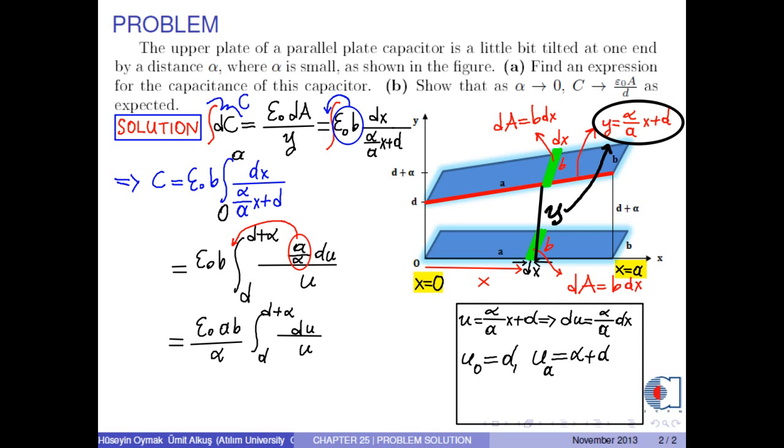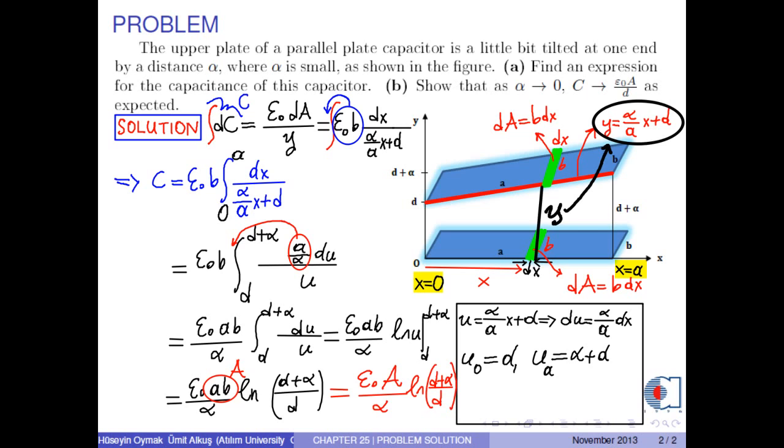The integral of du over u is ln u. So, we have epsilon zero times a times b over alpha times ln of d plus alpha over d, where a times b is the total area of the plate.